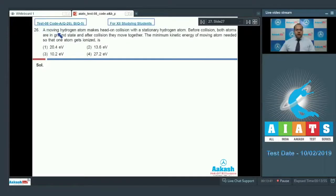In question number 26, a moving hydrogen atom makes head-on collision with a stationary hydrogen atom. Before collision, both atoms are in ground state and after collision they move together. The minimum kinetic energy of the moving atom needed so that one atom gets ionized is,